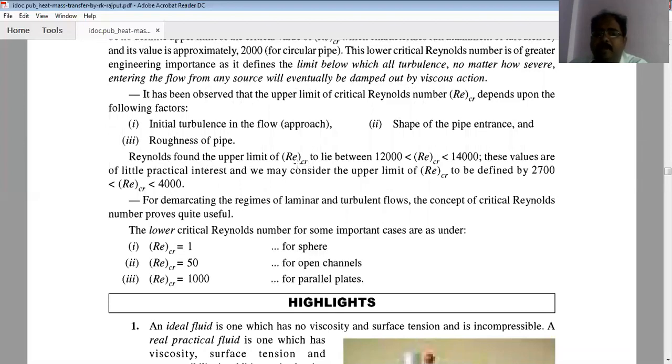Reynolds found the upper limit of Re critical to lie between 12,000 and 14,000. This value is of little practical interest, and we may consider the upper limit of Reynolds number to be defined by 2500 to 4000, demarcating the regime of laminar and turbulent flow. The concept of critical Reynolds number proved quite useful.